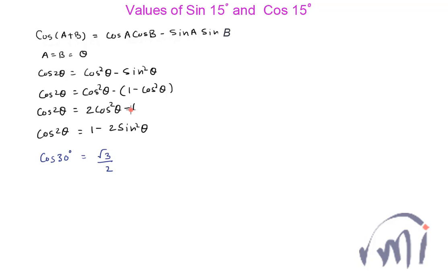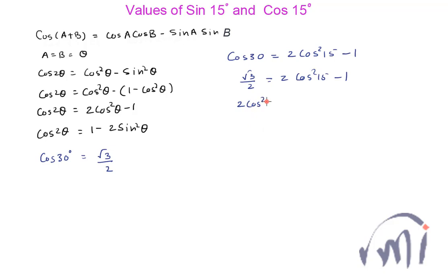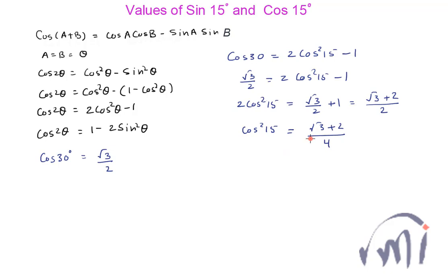To find the value of cos 15, I'll use the formula where cos 30, that is cos 2θ, equals 2cos²15 minus 1. So cos 30 is √3/2, which equals 2cos²15 minus 1. Therefore 2cos²15 equals √3/2 plus 1, which can be written as (√3 plus 2) divided by 2. So cos²15 equals (√3 plus 2) divided by 4. This is the value of cos²15, and I have one small manipulation — I'll multiply this expression by 2/2.